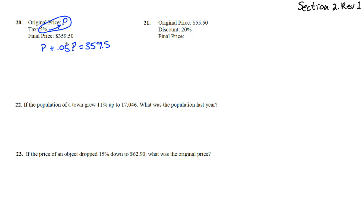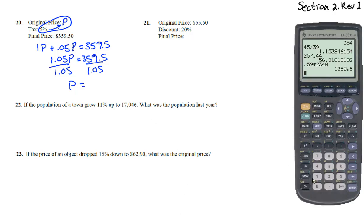This is an equation. We know how to solve this. Combine like terms. Remember there's a one right in front of that P. So that's 1.05P equals 359.5. We can solve for P by dividing by 1.05 on both sides. And we get P equals, let's bring up our calculator, 359.5 divided by 1.05.